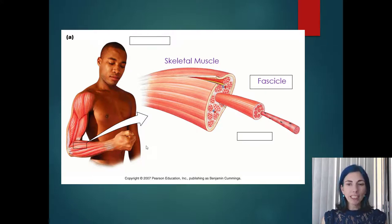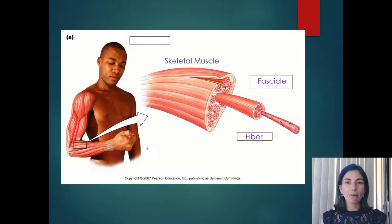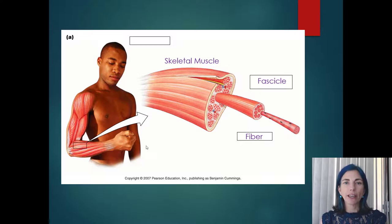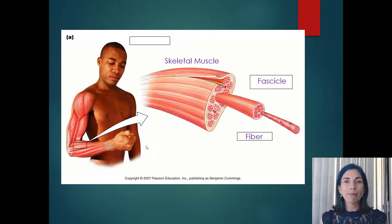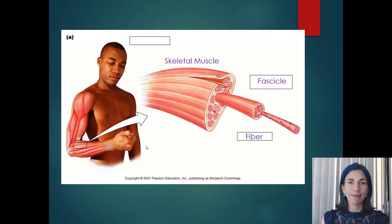When you open a fascicle, you find small long cells inside that comprise it. The individual cells are really muscle cells, but we call them fibers. This can be confusing because in anatomy the term 'extracellular fiber' means something like collagen or elastin — not a cell. But here, 'muscle fiber' means muscle cell. Write it down: muscle fiber equals muscle cell.